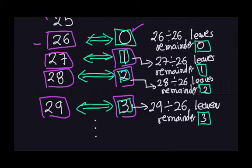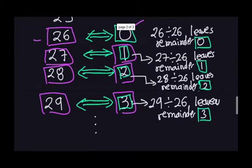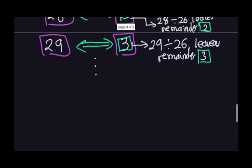So you only have to shift one unit clockwise. 28 is exactly the same: divide 28 by 26, remainder 2 — that's the actual number of positions clockwise. 29 is the same: 29 divided by 26 leaves remainder 3, and that's the actual number of positions you have to move clockwise.